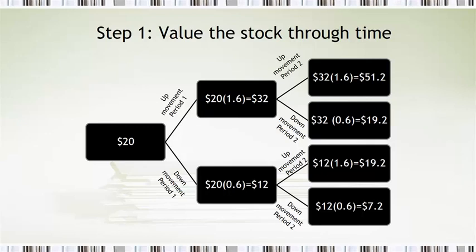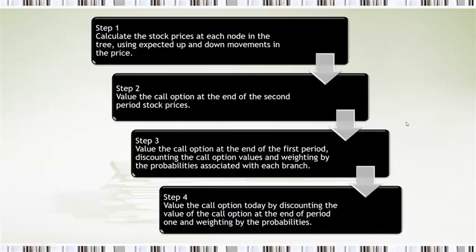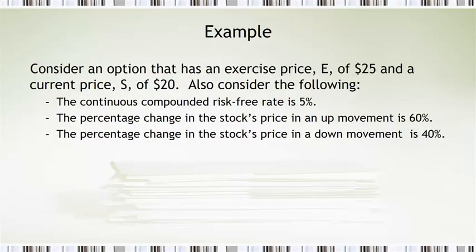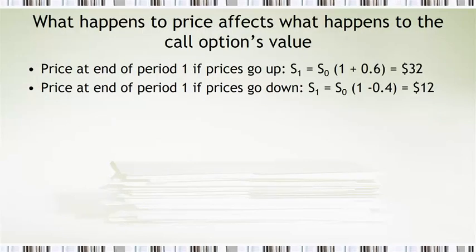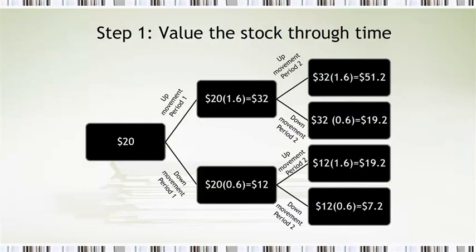Now in order to say what the call option is worth, we have to compare the price that we predict at the end of two periods with the call price. Now stepping back a few slides, we have a current price of 20, and we have an exercise price of 25. So in order for the call option to be valuable, then the price must be above 25. So if we go back to our tree, there's only one stock price that's above the 25, and that is the 51.2. All the rest would be out of the money, and we wouldn't exercise the call option.